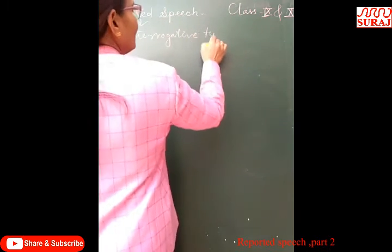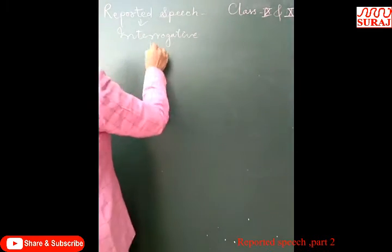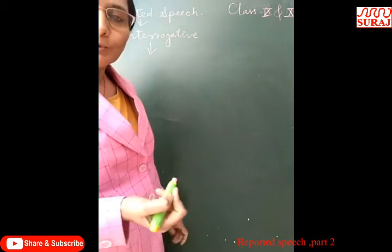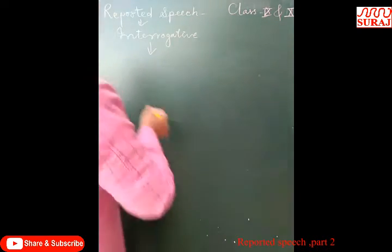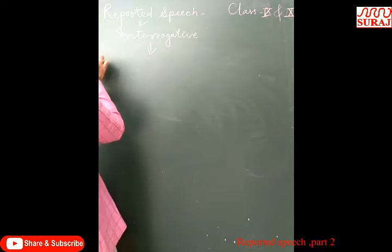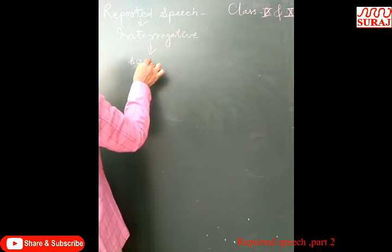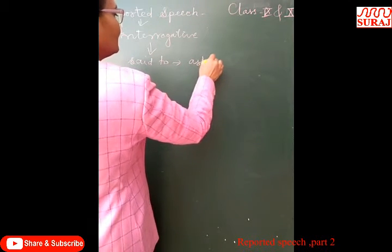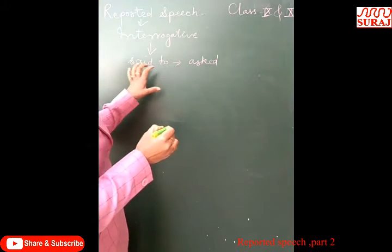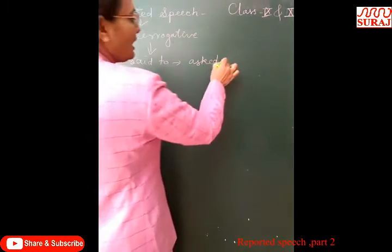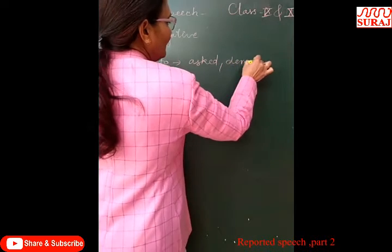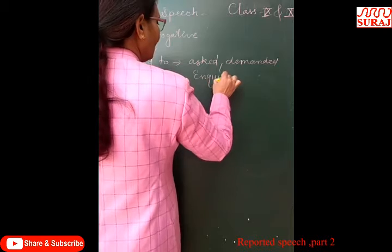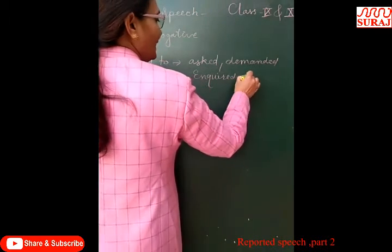In the interrogative type, there are four types of changes we have to make when converting direct to indirect speech. First of all, the reporting verb 'said to' is changed into 'asked,' 'demanded,' 'inquired,' etc.